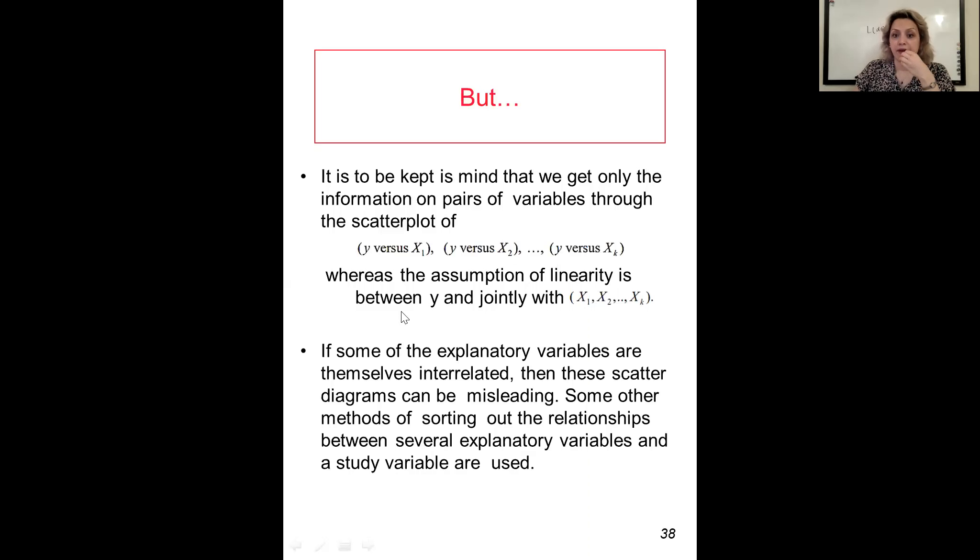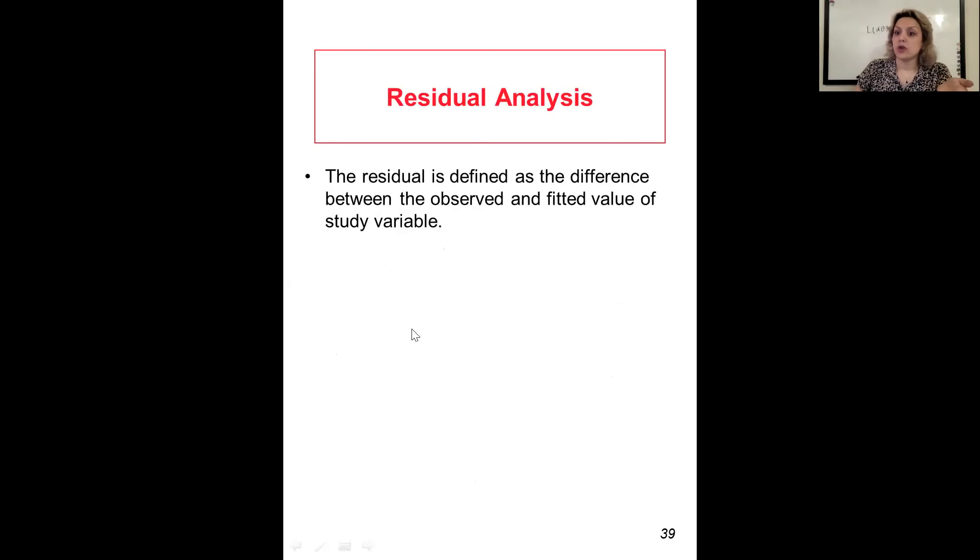If some of the regressors are themselves interrelated, then these scatter diagrams can be misleading because it doesn't give us the whole picture. It just shows what's happening between y and x1 or between y and x2. It doesn't tell us what's happening between y at the same time with x1 and x2. Some other method of sorting out the relationship between several experimental variables and a study variable are used, and that's residual analysis.